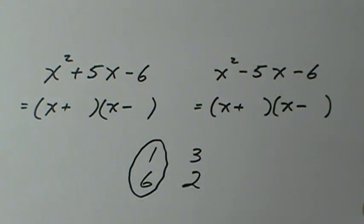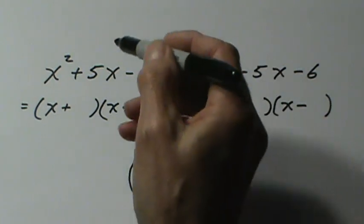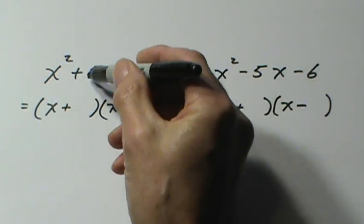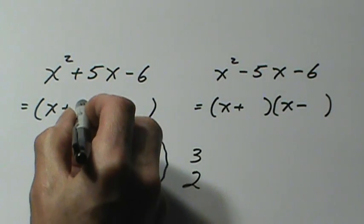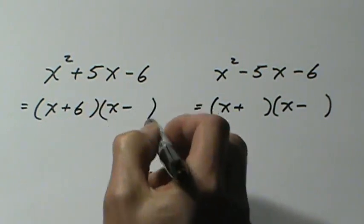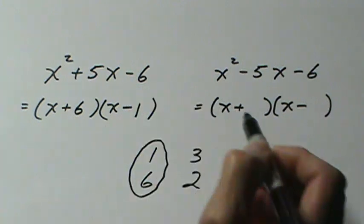Now because the signs are different you have to be careful where you put these numbers. In this case we need more positives, so we need the plus to go with the 6 and the 1 will go with the minus sign.